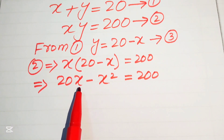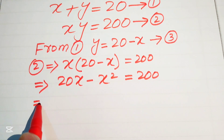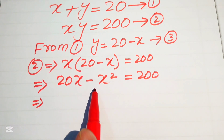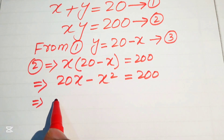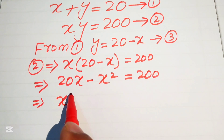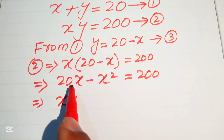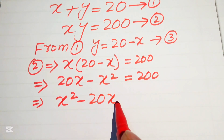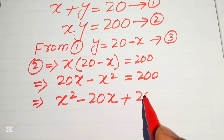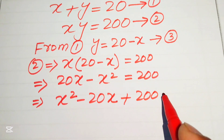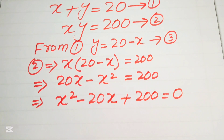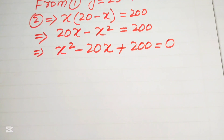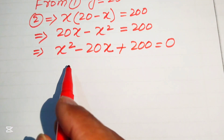This is a quadratic equation but not in standard form, so we need to convert it. We move these two terms to the right hand side. Moving minus x squared gives plus x squared, and moving plus 20x gives minus 20x, so we get x squared minus 20x plus 200 equals to zero. This equation is now quadratic in x.